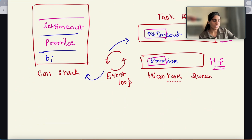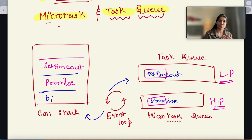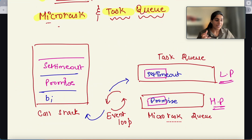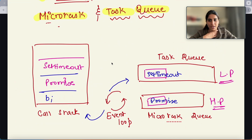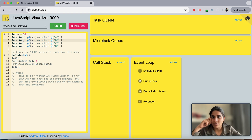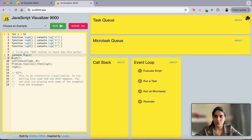So this is how it works: if you have asynchronous functions which are promise-related, then those will execute in the microtask queue first. Let's go ahead and try to understand using a visualization tool I found — we can see exactly how the call stack and microtask queue work and move step by step from one place to another. For example, we have a function log A, let A equals 10, then log A, log B, log C, and log D.